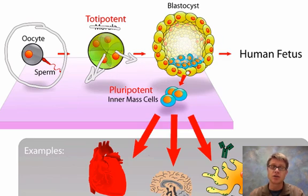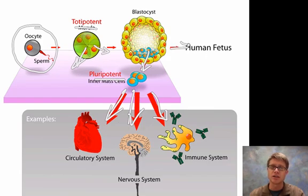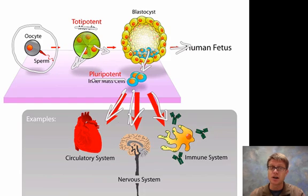But once you've folded into a blastocyst or blastula — which is a bunch of cells in a circle — if we collect cells at this point, those are called pluripotent stem cells. Pluripotent stem cells are those that could become any other cell. But they're pluripotent, not totipotent, because they can't form a brand new fetus. These cells have the potential to become any other cell, whether in the circulatory, nervous, or immune system.